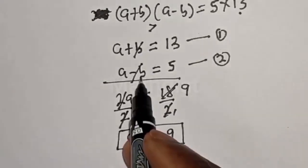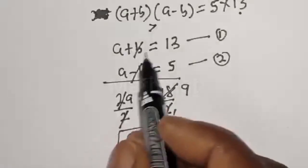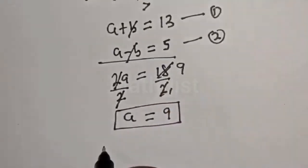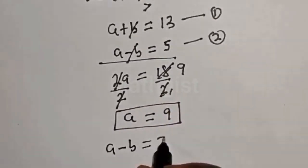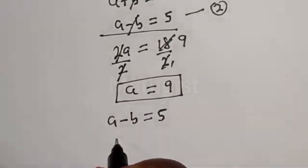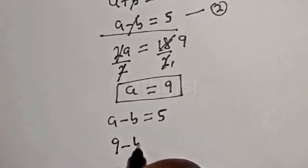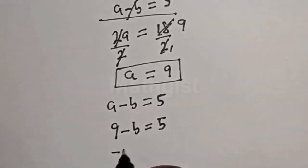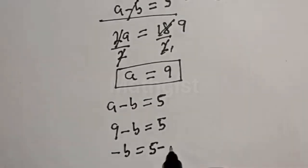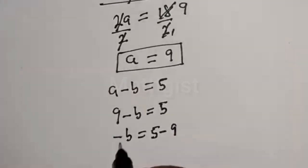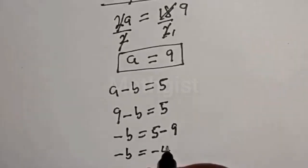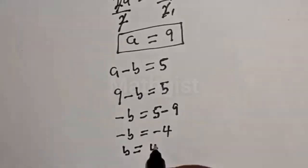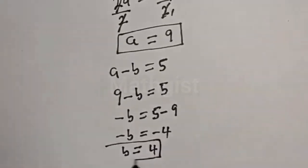Now we can solve for B using equation 2: A minus B equals 5. Substituting A equal to 9, we get 9 minus B equals 5, so minus B equals 5 minus 9, minus B equals negative 4. Therefore B equals 4.